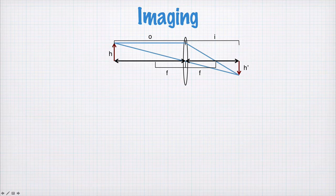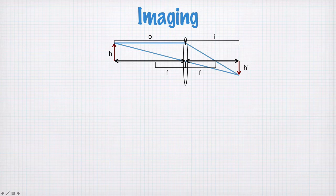First we have the height of the object, H, and the height of the image, H dashed. If the image is pointing in the opposite direction here, then it's negative. So H dashed here is negative.